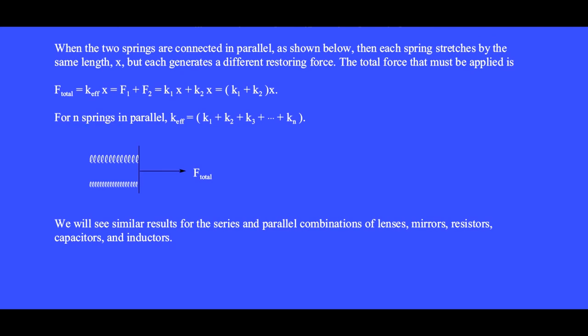For n springs in parallel, the effective spring constant is found by adding together all of the spring constants k1 through kn.